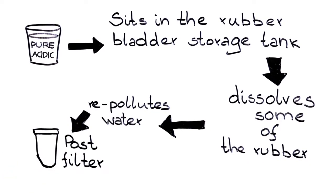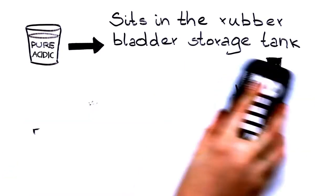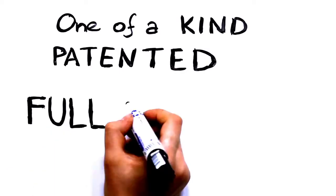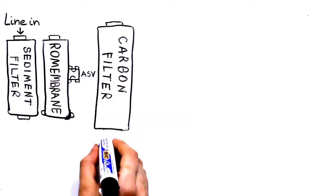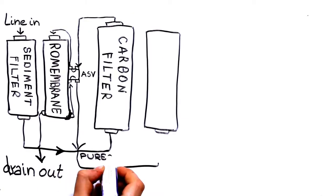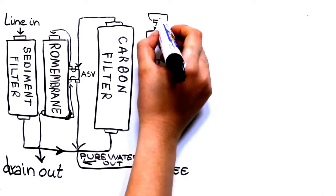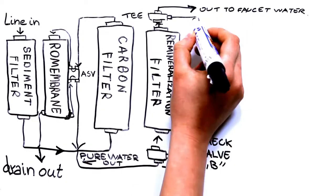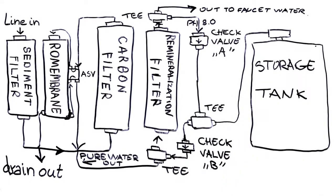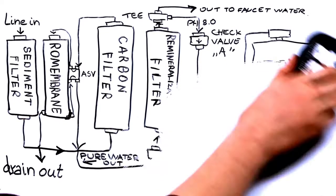Thus creating the need for the post-filter to then remove the rubber. Our one-of-a-kind, patented, full-contact technology forces the highly pure but acidic RO water through a remineralization filter, not only once, but twice. Once on the way to the storage tank, and once again on the way to the RO faucet, adding only calcium and magnesium minerals derived from crushed marble. It's an entirely natural process.